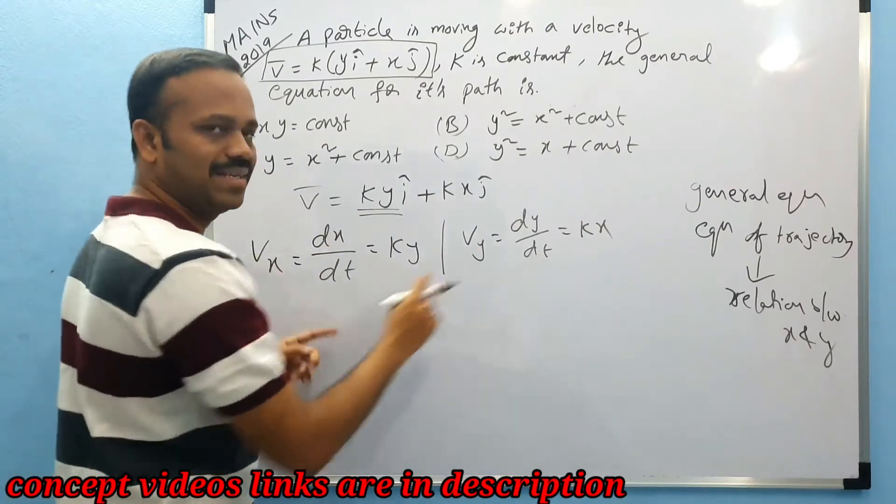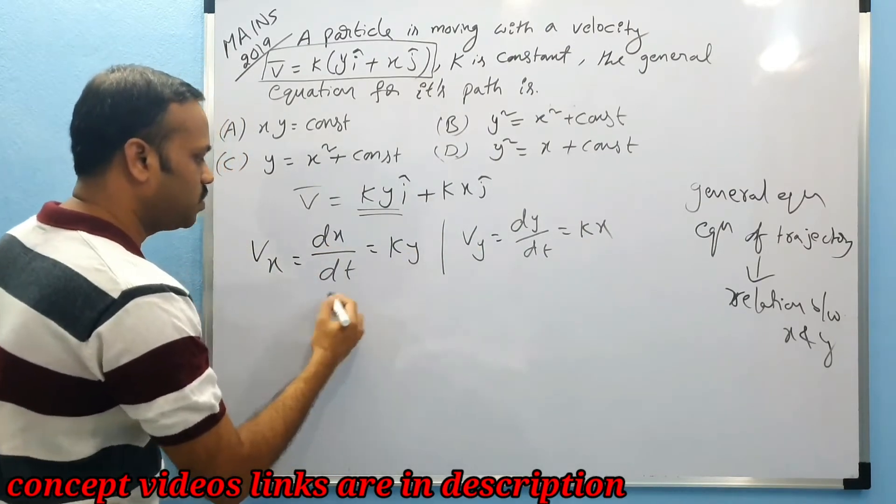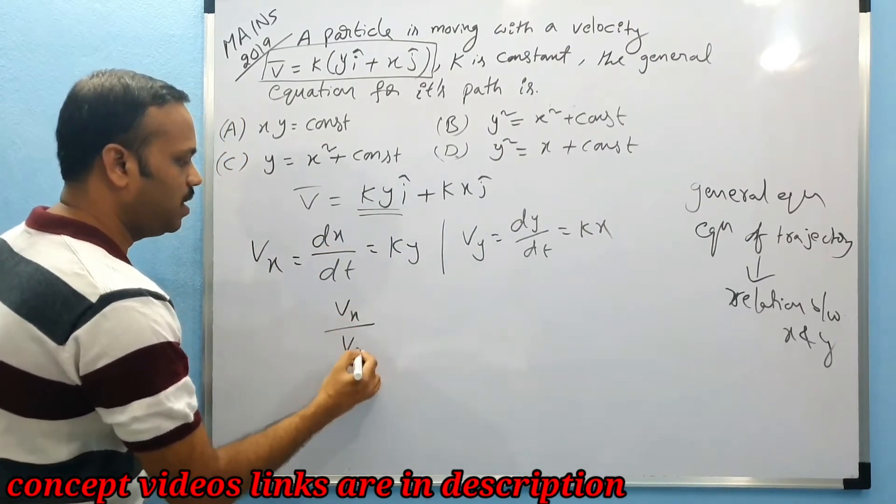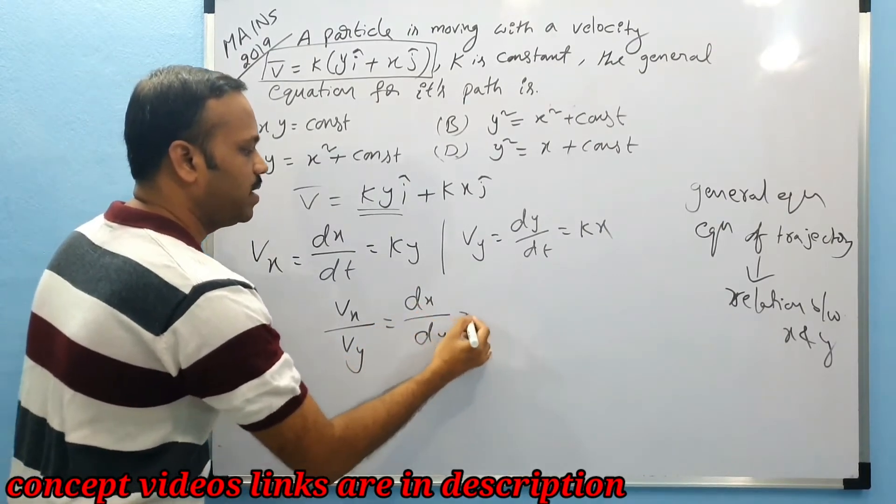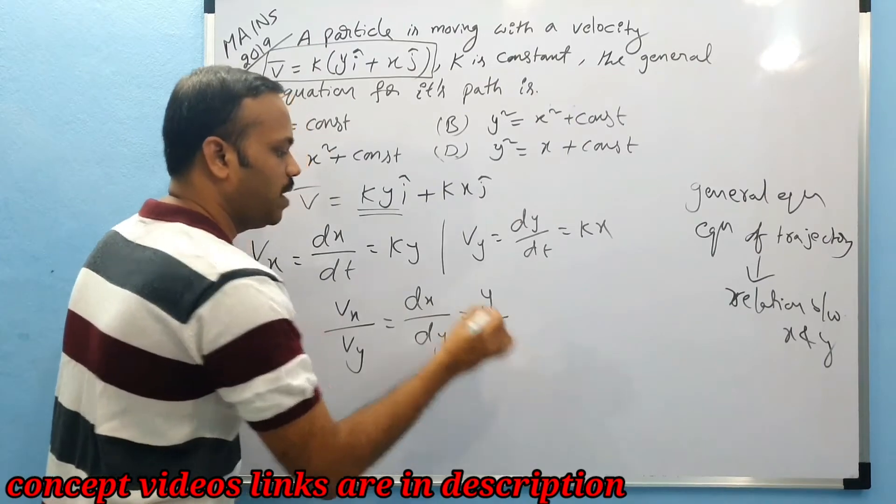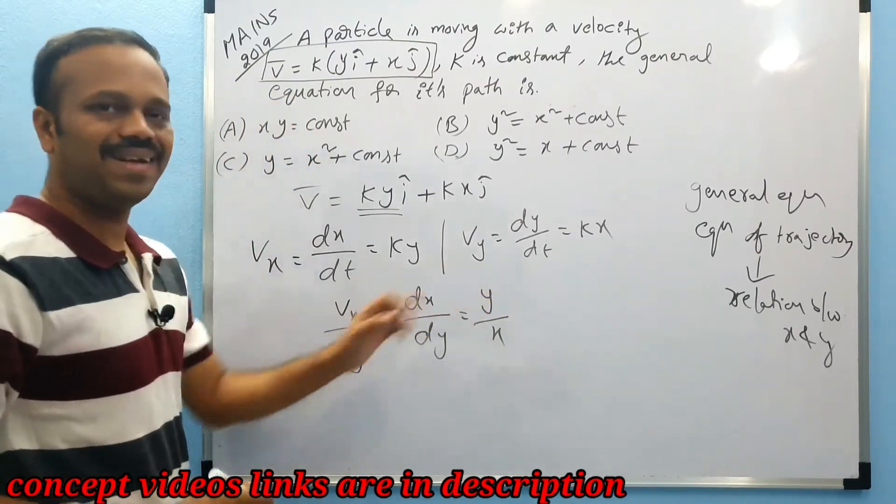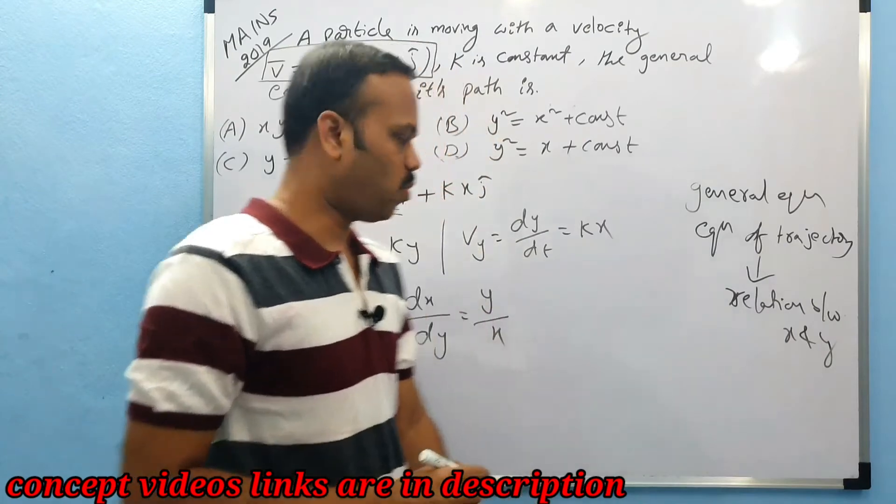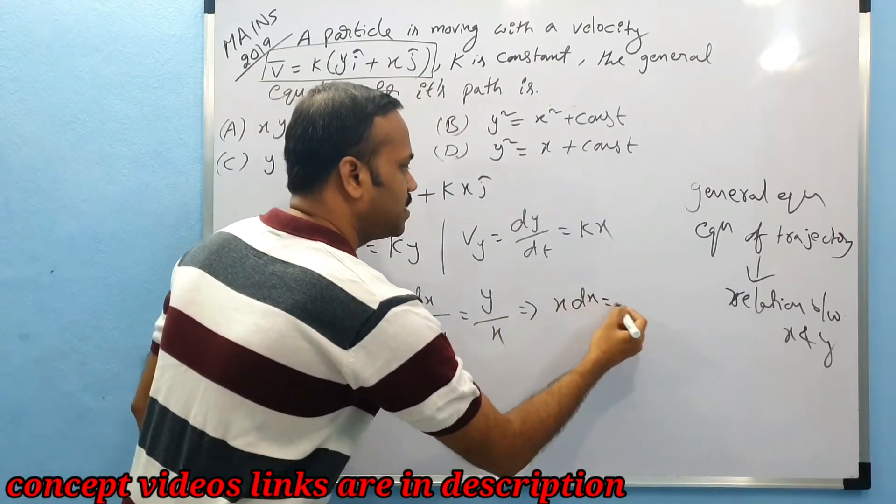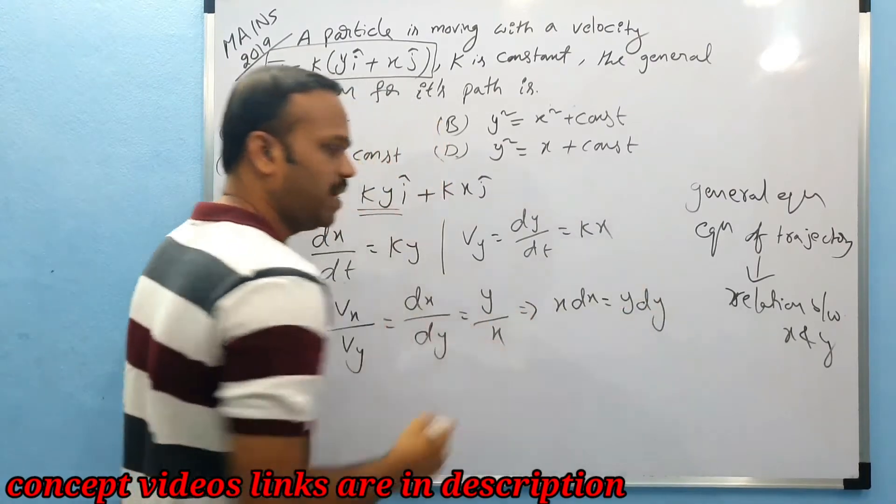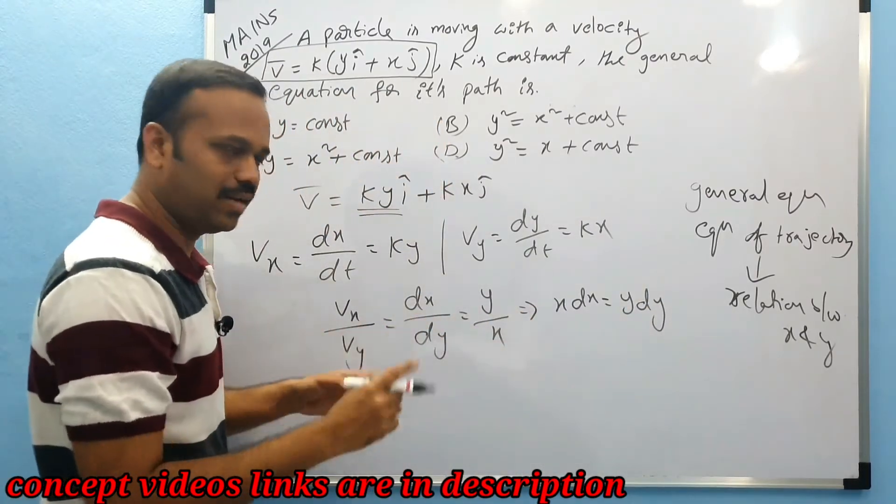They are asking x and y relation so we don't want dt's, so let's divide them. If you divide vₓ by vᵧ you get dx/dy equals y/x. I eliminated t because we want relation between x and y. So if you cross multiply, x dx equals y dy.